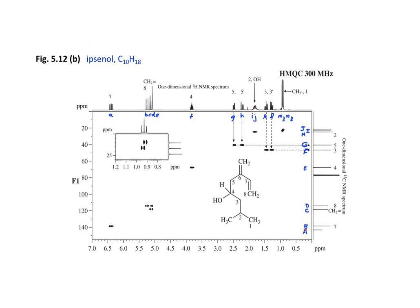Continuing with the analysis, K and L correlate with carbon F. Note that the trend in the proton chemical shifts is not exactly following the trend in the carbon chemical shifts. That might not have been obvious if we were simply having to make guesses without the HMQC correlation data.